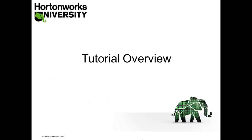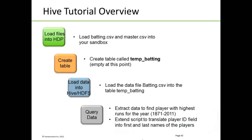We would like you to take a look at the tutorial provided. What we would like you to do is first load your files into the distributed file system. We are going to load two comma-delimited files: one holding baseball statistics called batting.csv, and one providing ancillary information called master.csv.